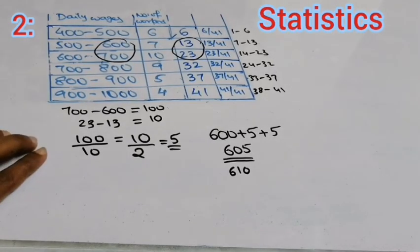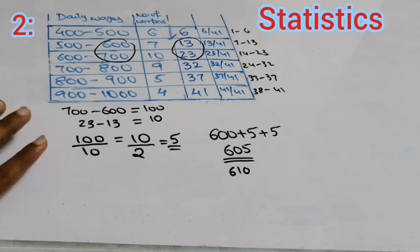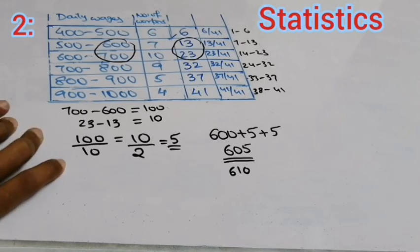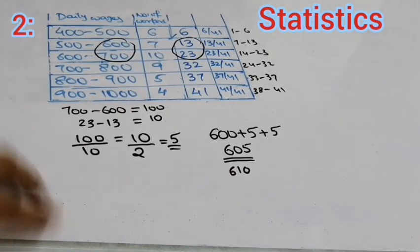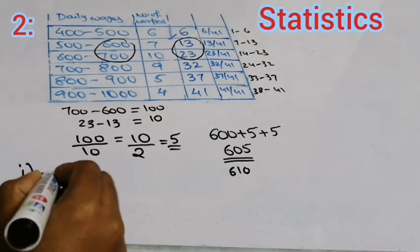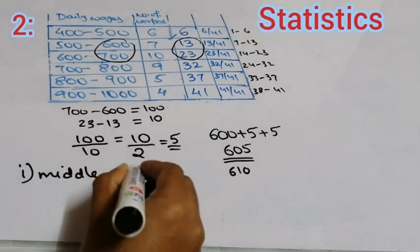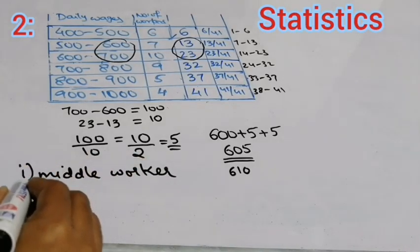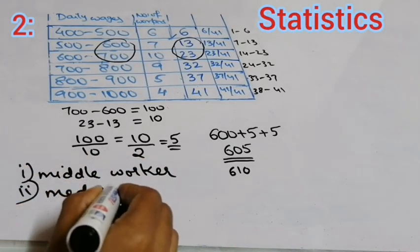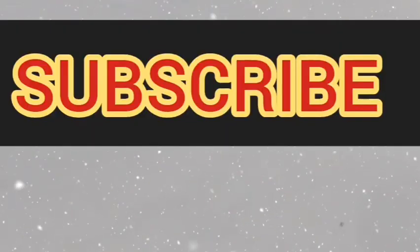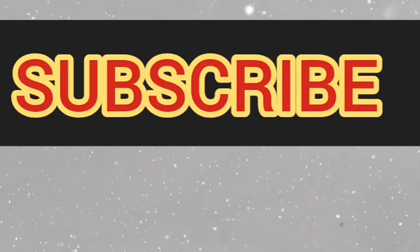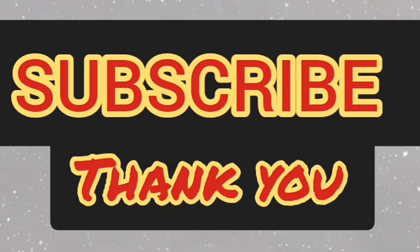This part of the question is done. The next part asks you to find the middle worker — which position is the middle worker — and then find the median wage. You can use the method studied in school or the method shown in the previous question. If you found this video useful, please share, subscribe, and press the bell icon for notifications. Thank you.